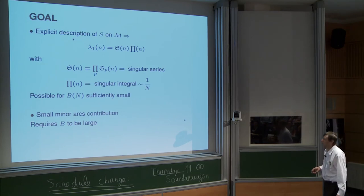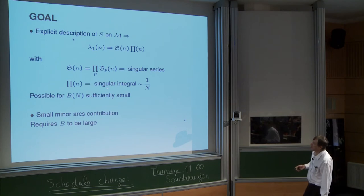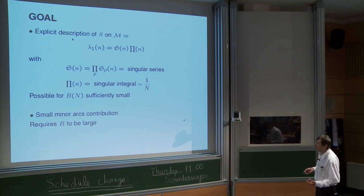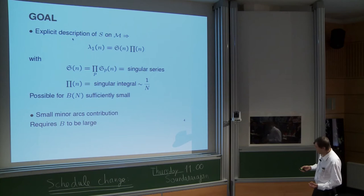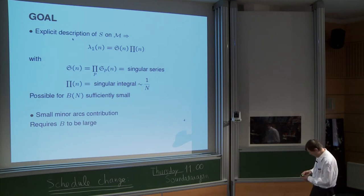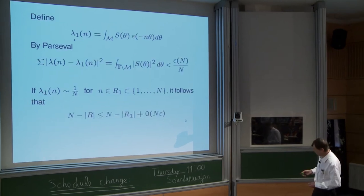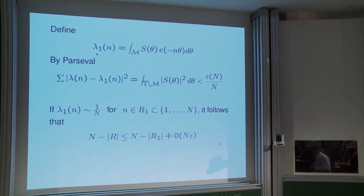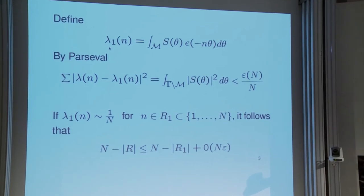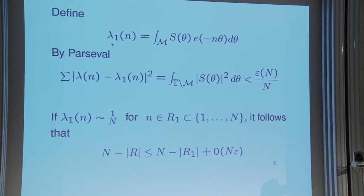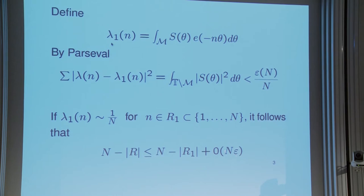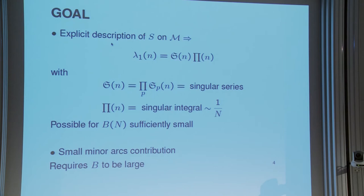There is a parameter B involved. On one hand, this understanding is easier when B is small, because we're taking very small neighborhoods of rationals with very small denominators. On the other hand, if B is too small, the epsilon we're getting will be larger. The whole thing is a compromise: how large we can get B to get as small epsilon as possible, while still maintaining control on the major arcs.